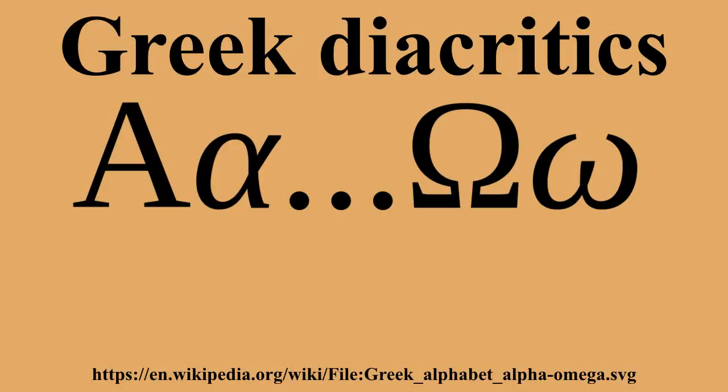Polytonic Greek uses many different diacritics in several categories. At the time of ancient Greek, each of these marked a significant distinction in pronunciation. Monotonic orthography for modern Greek uses only two diacritics — the tonos and dieresis — that have significance in pronunciation.